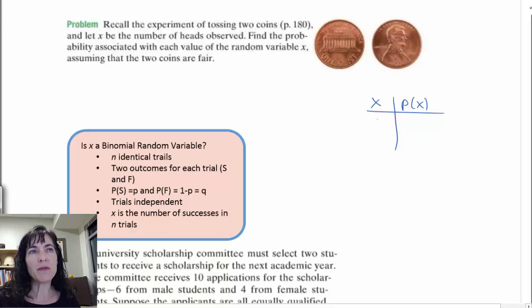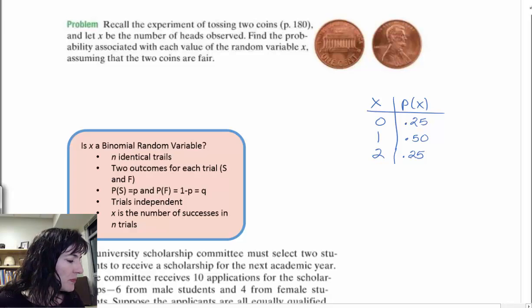We had a possibility of seeing no heads in two coin tosses. We could see one heads in two coin tosses. And we could see two heads in two coin tosses. And if you remember, the probability of seeing zero heads in two coin tosses was 0.25 or one quarter. The probability of seeing one heads was 0.50 or 50 percent. And then seeing two heads was also 0.25 or 25 percent. So, in this case, we're defining, and this is what we had done before that little table.